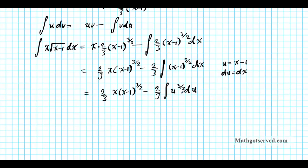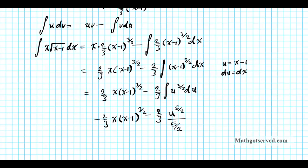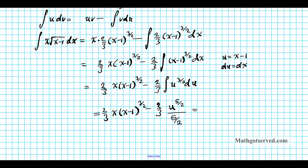Using the power rule, the antiderivative of u to the 3/2 is u to the 5/2 divided by 5/2. So we have 2/3 x times x minus 1 to the 3/2 minus 2/3 times 2/5 times u to the 5/2. Multiplying 2/3 by 2/5 gives 4/15, and substituting back u equals x minus 1, we get 2/3 x times x minus 1 to the 3/2 minus 4/15 times x minus 1 to the 5/2, plus C.